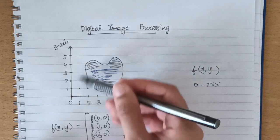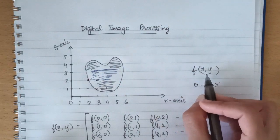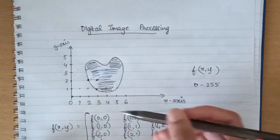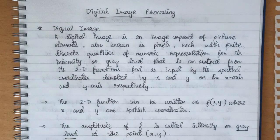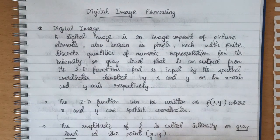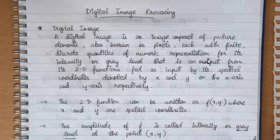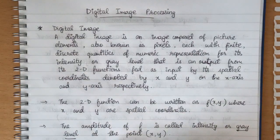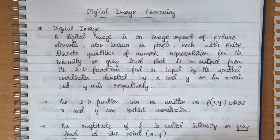So exactly what I explained to you with the help of this image—this image can be represented as a function of f of x and y where x and y are these spatial coordinates. The amplitude of the f is called intensity or gray level at the point x comma y. Now this term gray level is very important and it is mainly used for image classification.